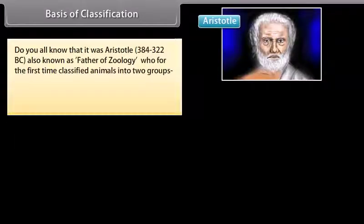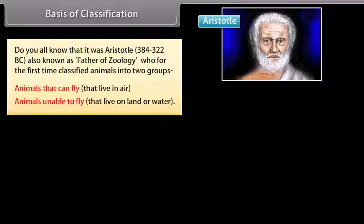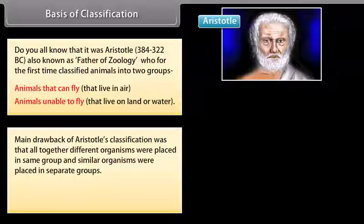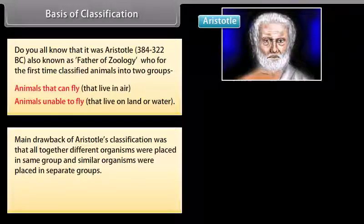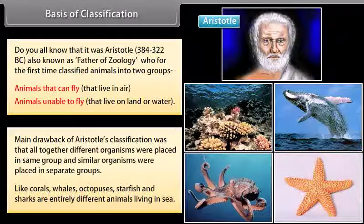It was Aristotle (384 to 322 BC), also known as father of zoology, who for the first time classified animals into two groups: animals that can fly and live in air, and animals unable to fly that live on land or water. The main drawback of Aristotle's classification was that altogether different organisms were placed in the same group and similar organisms were placed in separate groups, like corals, whales, octopuses, starfish and sharks, which are entirely different animals living in the sea.